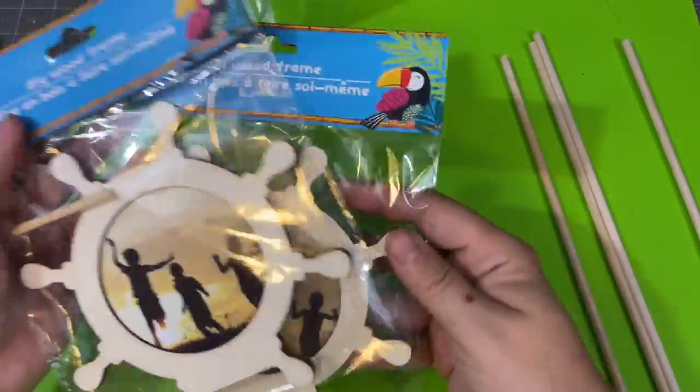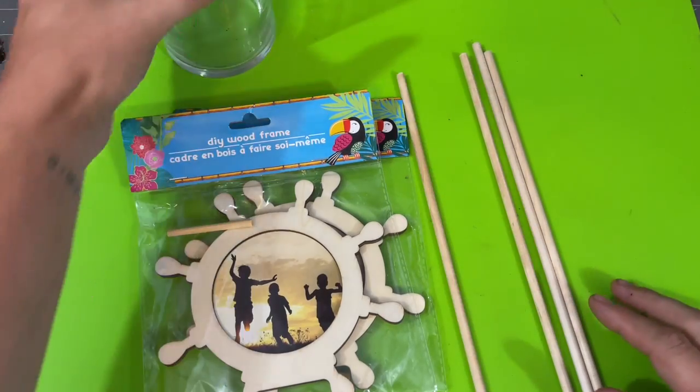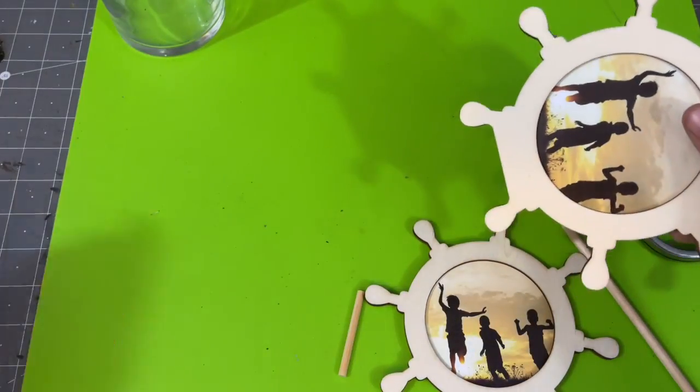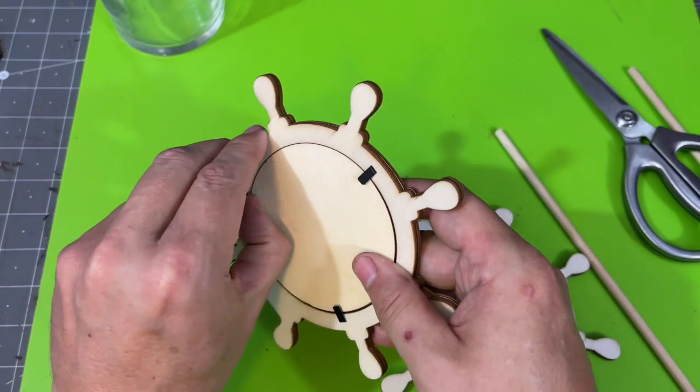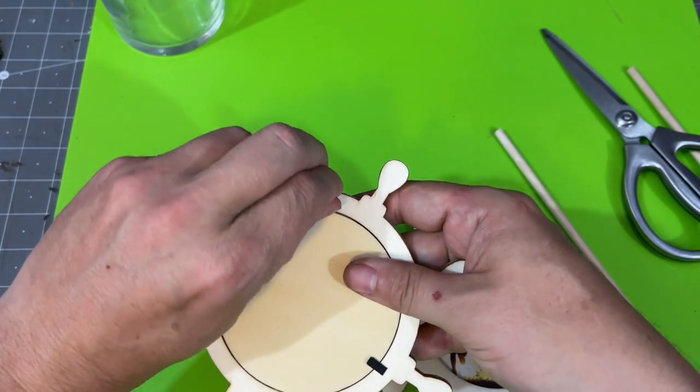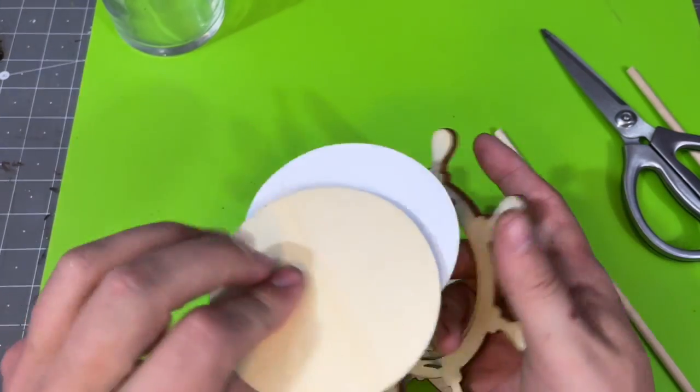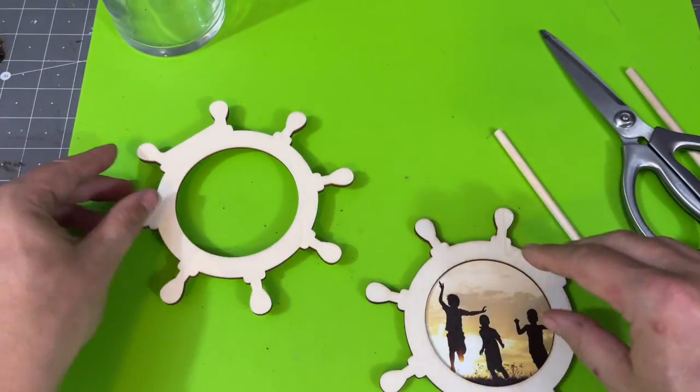All right everyone we are going to take two of these Dollar Tree nautical frames, some dowel rods that I also grabbed from Dollar Tree, these are the tall ones, and we're going to grab one of these glass cylinder vases. For these frames the first thing we're going to do is take them apart and take all the guts out of it. We're going to remove this wood circle, definitely keep that wood circle because that will come in handy and we're going to also get rid of the plastic and the paper and everything.